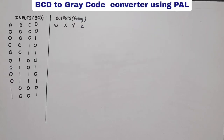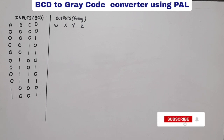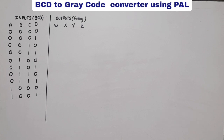Hello everyone. In this video lecture of digital electronics or digital system design, I am going to implement a BCD to Gray code converter. Basically, in this circuit our input will be BCD and output should be Gray code. We all know that BCD means binary coded decimal — numbers are 0 to 9, so we will take 0 to 9.